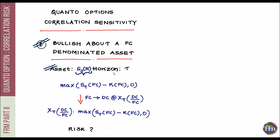The investor's horizon is some capital T. The investor goes ahead and purchases a call option on the Nikkei with a maturity of T and a strike K, which is specified in JPY, the foreign currency. The payoff of this call option will have to be translated or converted into the domestic accounting currency of this investor, which is USD.